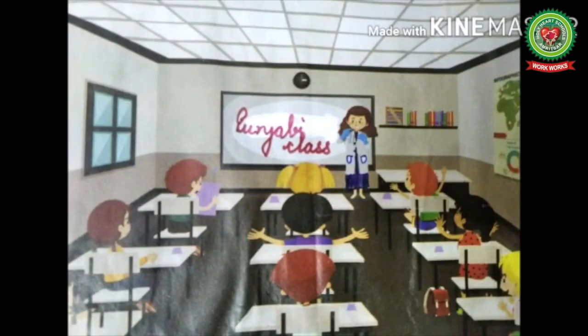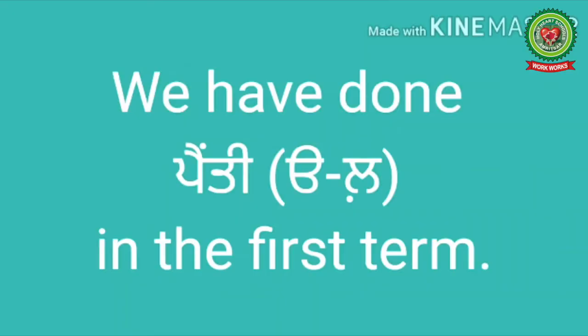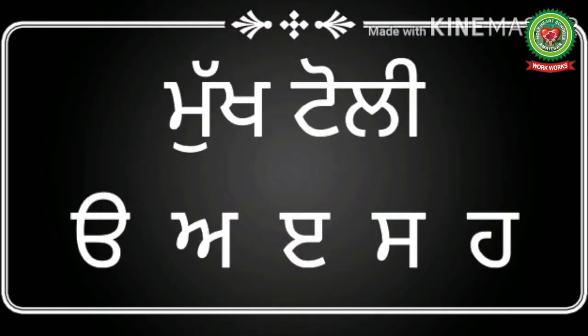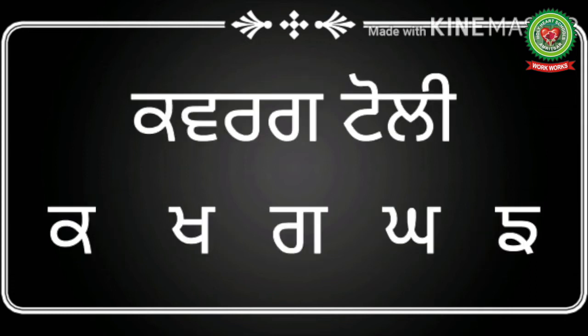Hello students, welcome to Punjabi class. As we all know, we have done Panthi in our first term, where we learned Ura till Lalle Perbindi. There are eight lines and a total of 41 letters in Punjabi Panthi. The first line is called Mukhtoli: Ura, Eda, Edi, Sasa, Ha Ha. The second line is Kvarghtoli.